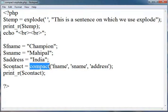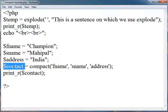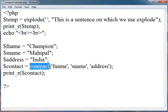So I am using the compact function. First you have to give the name of the array. I have given it $contact, then equals sign, then compact. What you need to do is write the variable names: fname, sname, address.